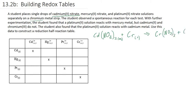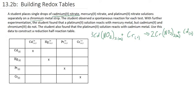We're going to have cadmium metal beside it. We can quickly balance this with two of these and three of these, and then we're also going to need three of these and two of these. It's just a single replacement reaction, and in this case it was spontaneous, so this reaction happens when you do it.